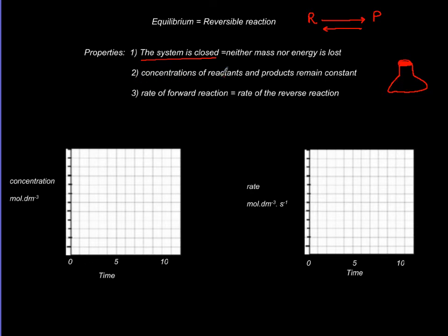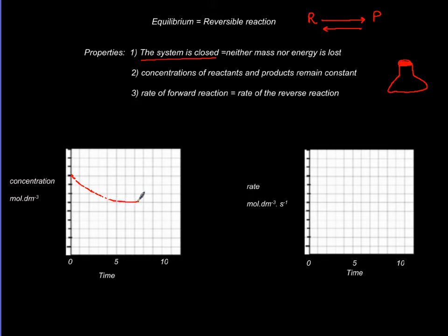The second important attribute is that the concentration of reactants and products remains constant. On this graph, concentration in moles per decimetre cubed is plotted versus time. At the beginning there is no product but there is reactant. The reactant starts being consumed as time elapses, and by around 5 minutes it reaches steadiness — the concentration is no longer changing.